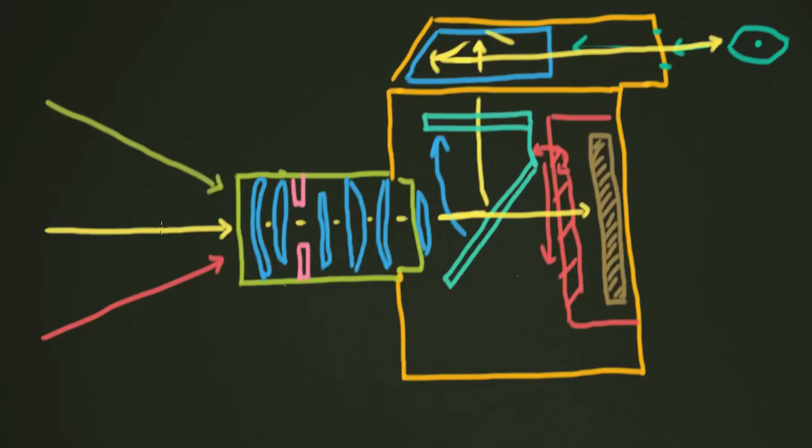And then the light travels in through the lens, hits the film, exposes it. And then when the camera says that the exposure is correct, then everything closes back down. So the mirror drops back down, the shutter closes, and the film is exposed.